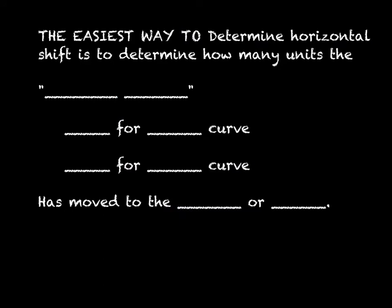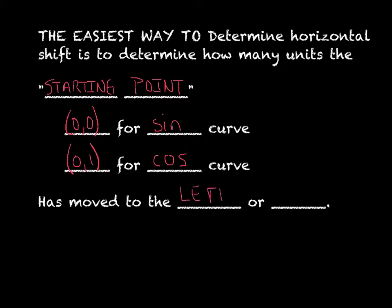They're very famous on the Regents exam for giving you a picture and then asking you to identify the phase shift just by looking at the picture. Here's the easiest way to determine a horizontal shift is to determine how many units the starting point - the starting point for the sine curve is going to be (0,0), and the starting point for cosine is (0,1), that's the one that starts real high. What we're going to do is we're going to determine how many units the starting point has moved to the left or to the right. It's kind of overwhelming when you look at the entire graph, but if you can just narrow your focus down to just finding where the starting point went, that'll really make your job significantly easier.